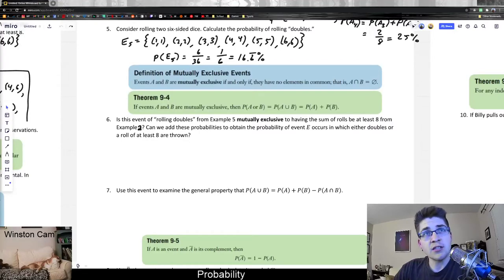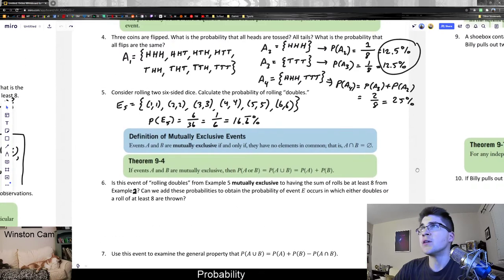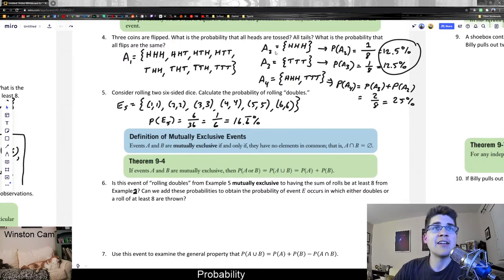Now, we define events to be mutually exclusive if they have no overlapping elements. Like in the last video, we looked at an example where we flipped three coins and one of the events was they all came out heads. And a different event was they all came out tails. Those were referred to as disjoint in that video, but by definition those are also mutually exclusive because they have no elements in common.